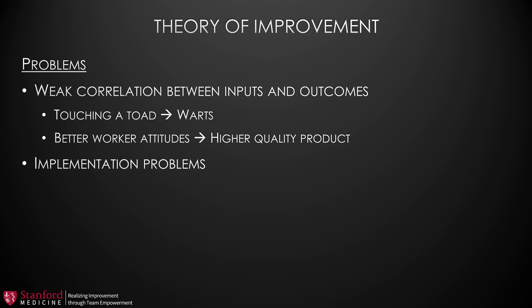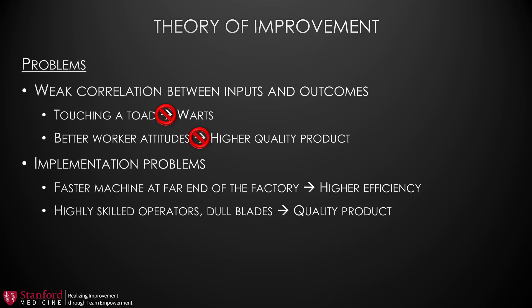For example, I might think that the reason I've gotten warts is because I've been handling toads, or I might think that quality defects are a result of sloppiness of the workers, which I believe is a result of their bad attitudes. In reality, it's very likely that neither of these inputs are strongly associated with the outcomes that I want. On the other hand, the inputs may be reasonable, but the implementation or other persistent problems in the system may prevent us from achieving the desired results.